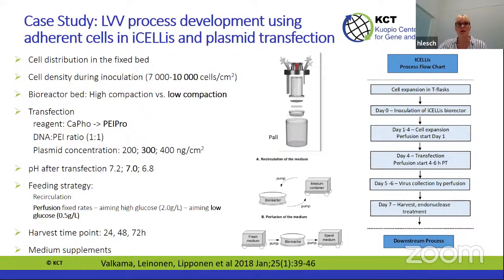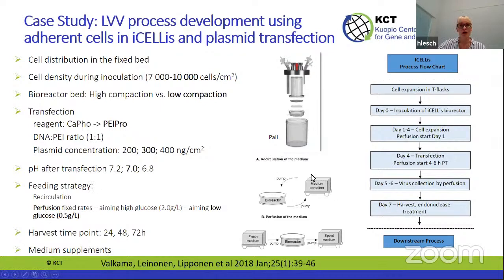We started with calcium phosphate-based transfection, but quickly realized it was not reproducible or scalable and switched to FECTPro from Polyplus. Transfection required substantial optimization — we optimized the DNA-to-reagent ratio, plasmid concentrations, and ended up at a ratio of 1:1 and 300 nanograms per square centimeter. We tested different pH conditions and different feeding strategies. In this bioreactor system, the internal volume is limited, so one option is recirculation with an external medium tank, or alternatively true perfusion where fresh medium is fed in and spent media is removed.